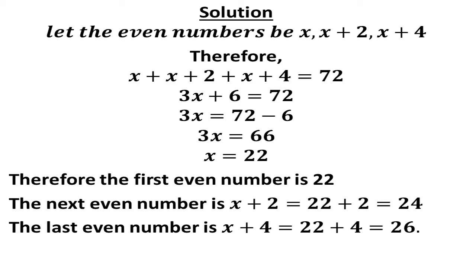Therefore the first even number is 22. Then to get the next even number, we have x plus 2. Knowing fully well that our x is 22, that means we have 22 plus 2, that gives us 24.